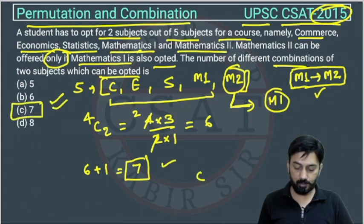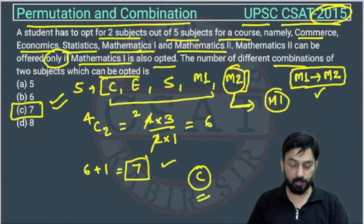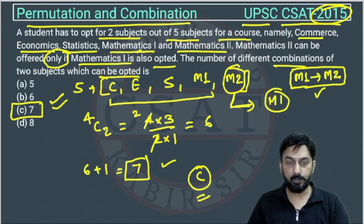This is the answer. I hope you all understood. This was a very easy question. Just the language is tricky in the permutation and combination chapter. If you understand the concept and you can understand the language, you can solve it.